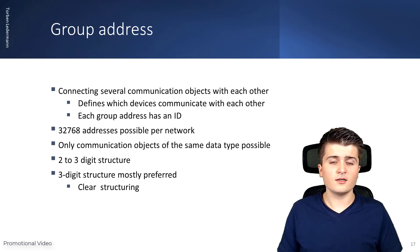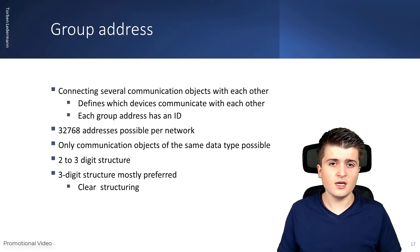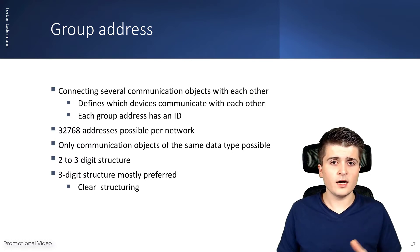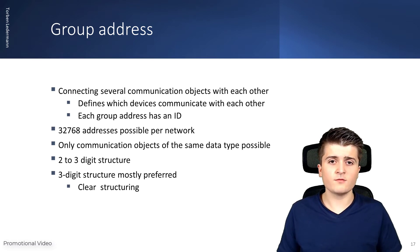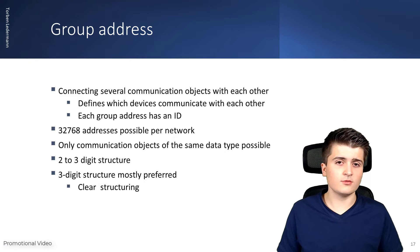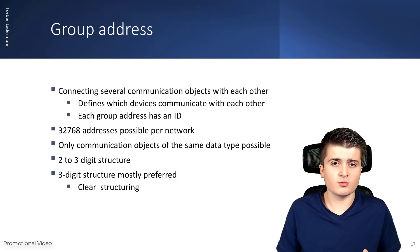Each group address gets its own ID, which is either a two-digit or three-digit structure. In practice the three-digit structure is preferred because it gives more flexibility in sorting group addresses. For example, every group address starting with 1 is for lighting, and if the middle digit is 3 it is for switching. A group address starting with 2 and 0 could be for blind movement. So the three-digit structure is generally preferred, but you can freely choose which one to use.